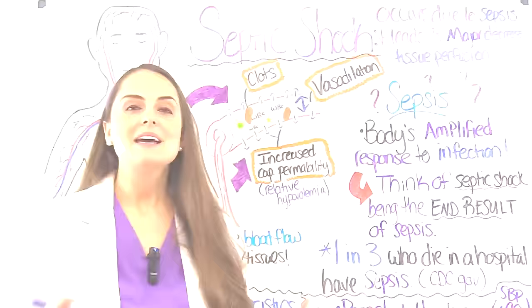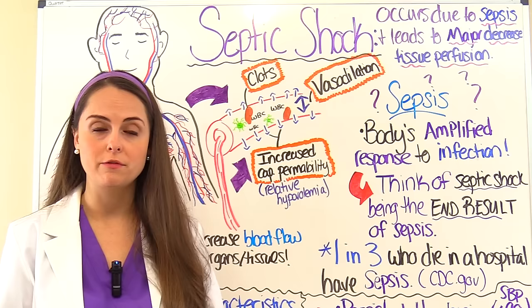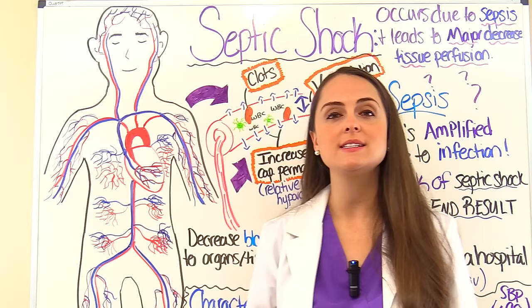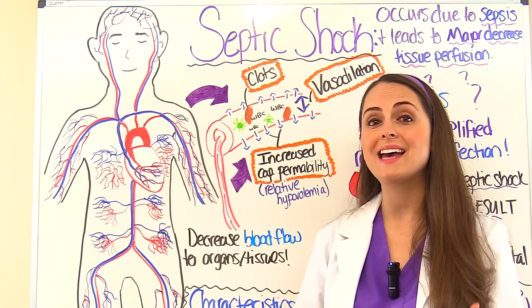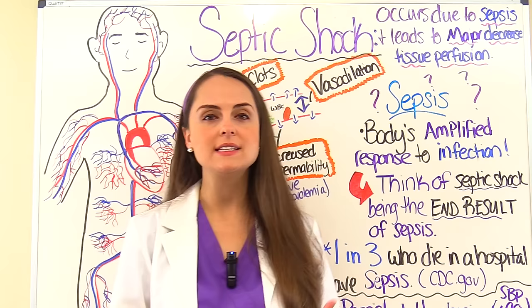Septic shock occurs due to sepsis and this leads to a major decrease in tissue perfusion. The cells that make up our tissues and organs do not receive enough oxygen, hence blood flow, so they will start to experience what's called hypoxic injury. If this continues the cells will actually die, and when cells die they take organs with them because organs are made up of cells.